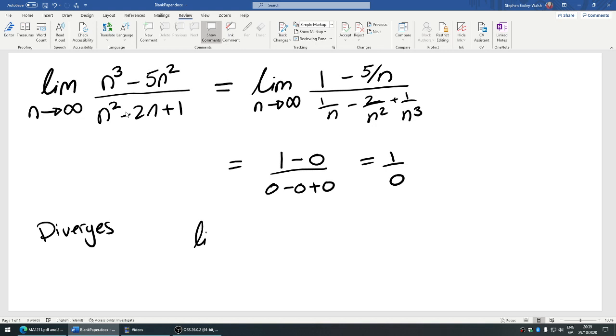When you're dealing with a rational function here, the other way to think about this is when dealing with a rational function and the variable, in this case n, is going to infinity, you can just look at what the dominating term is.